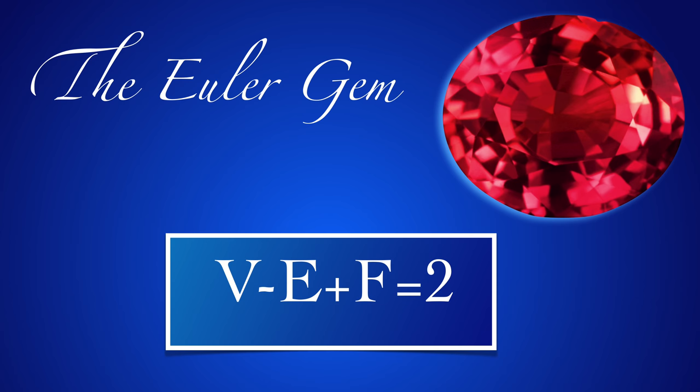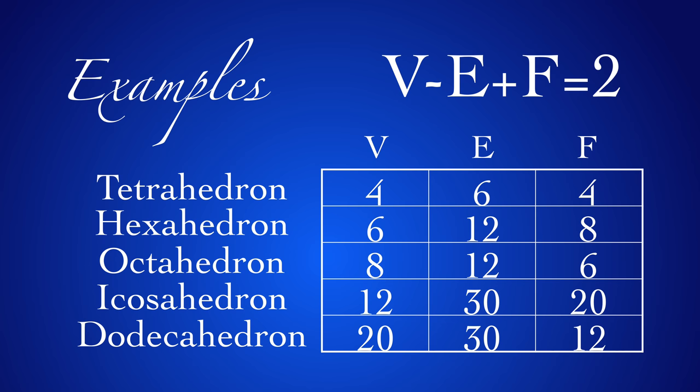We have already seen this formula — it is called the Euler gem. Why? Because it is a gem, and one of the most beautiful formulas in mathematics. If you look at the ruby in the picture, count the number of vertices V, number of edges E, and number of faces F — V minus E plus F equals 2. Here are the numbers V, E, F in the case of the five platonic solids. Already Descartes had counted them — he was the first to discover this Euler gem formula. But Euler was the first to prove it.